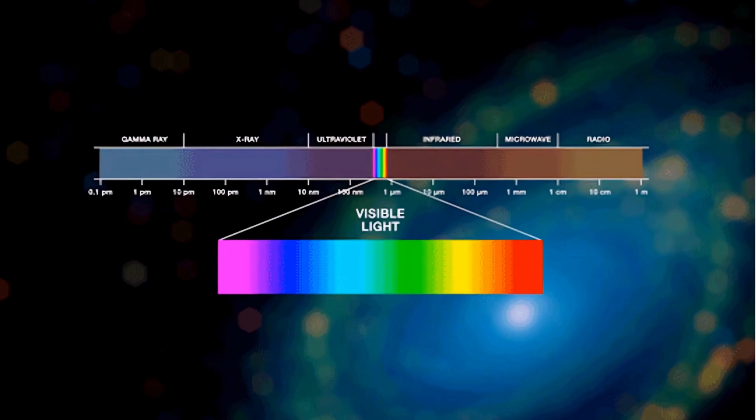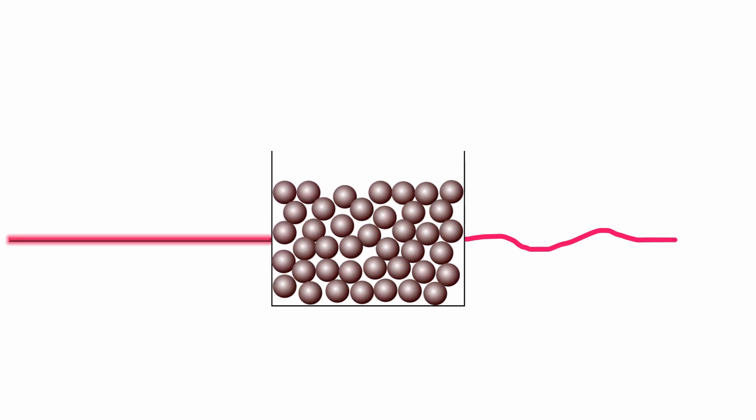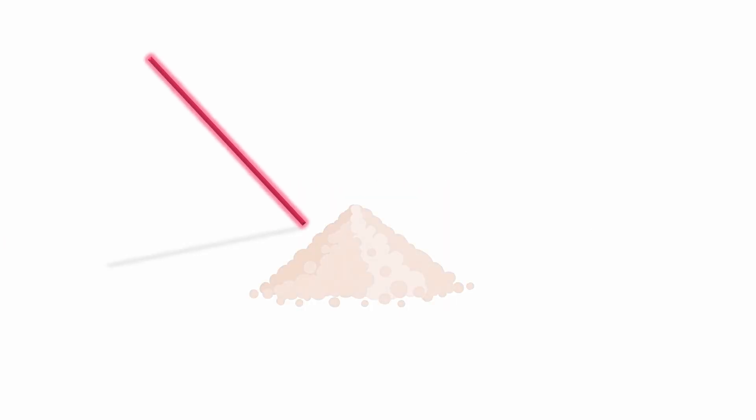At its core, spectroscopy is the study of how matter interacts with electromagnetic radiation. When light hits a substance, it can be absorbed, emitted, or scattered, producing a unique fingerprint that tells us about the material structure and properties.